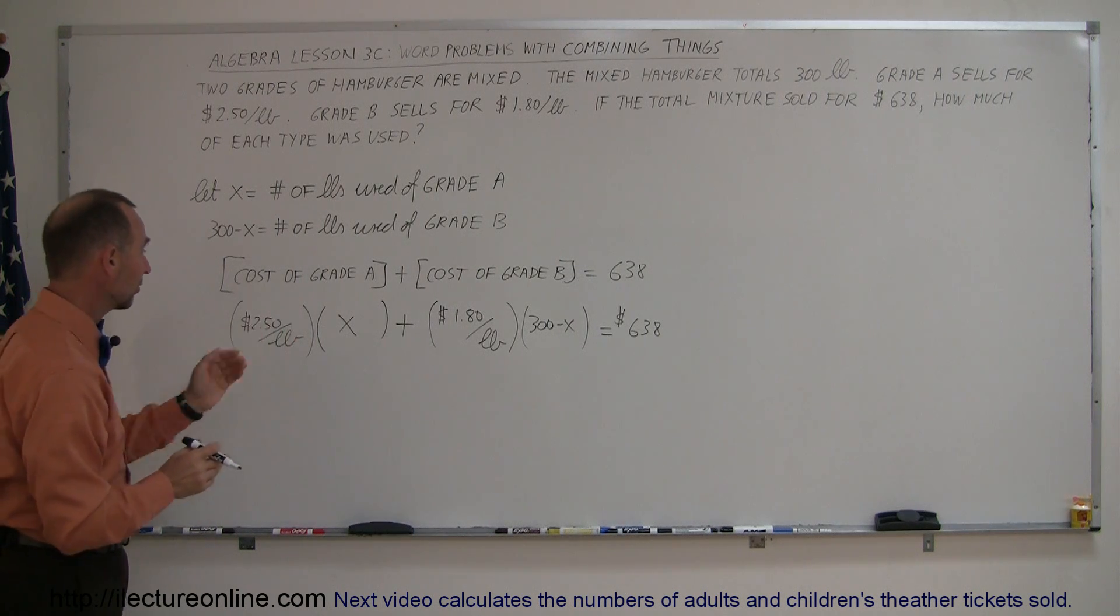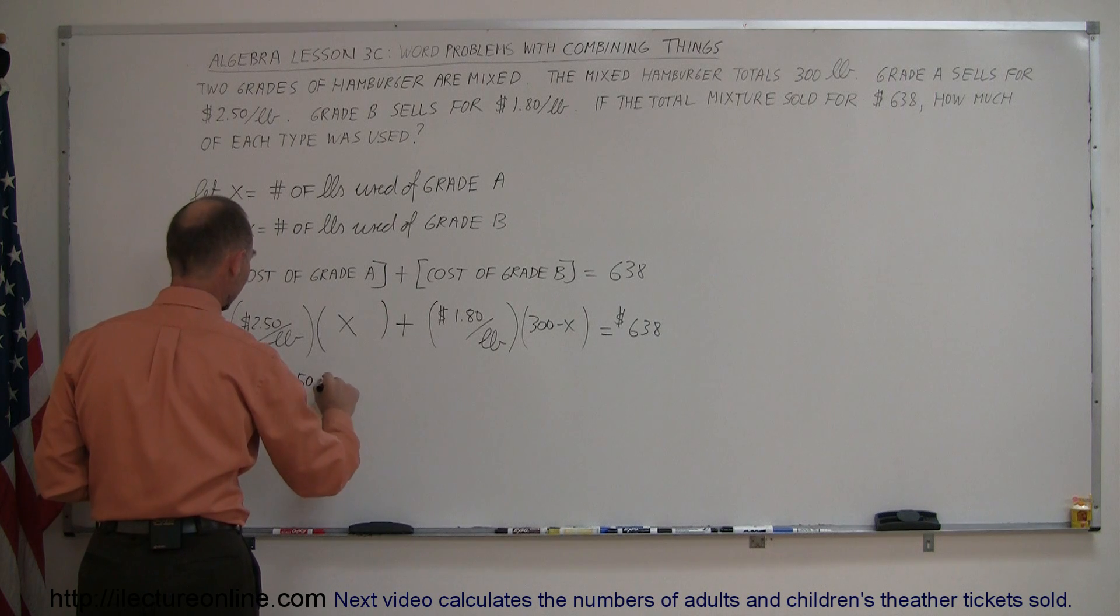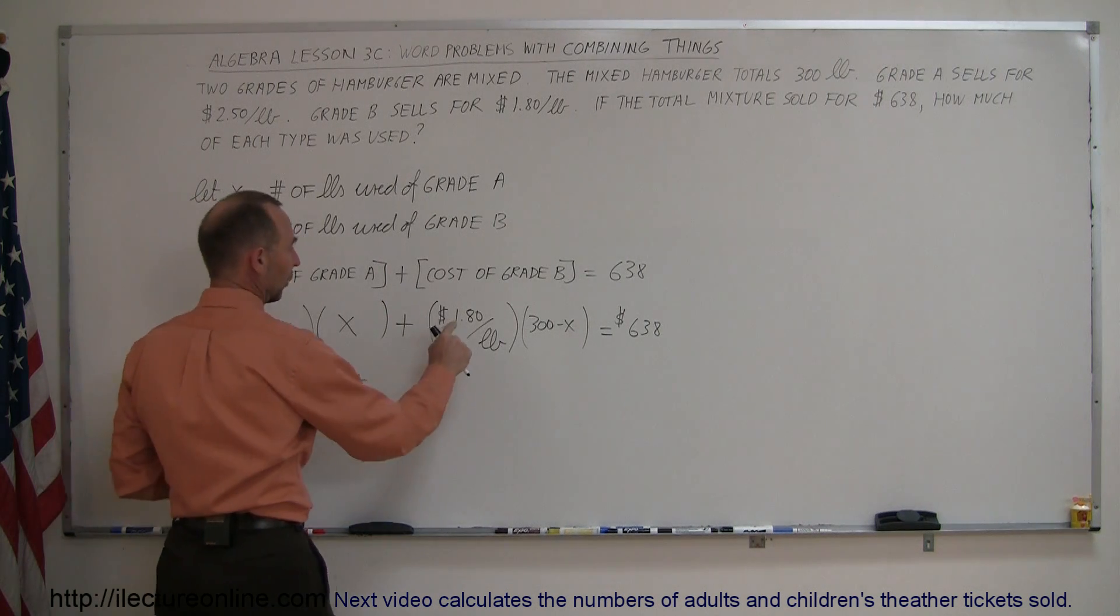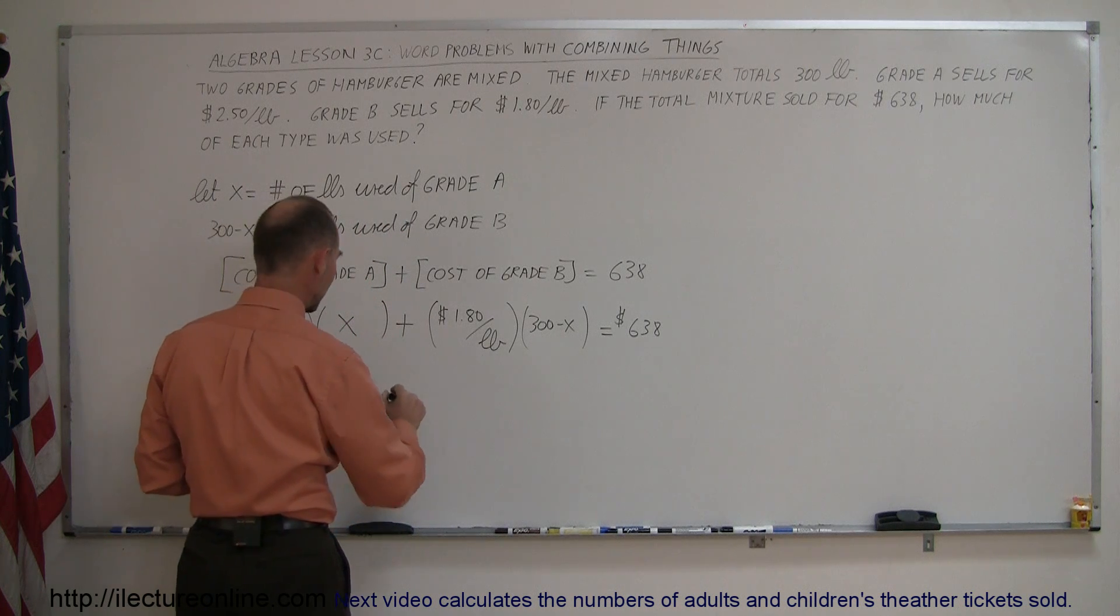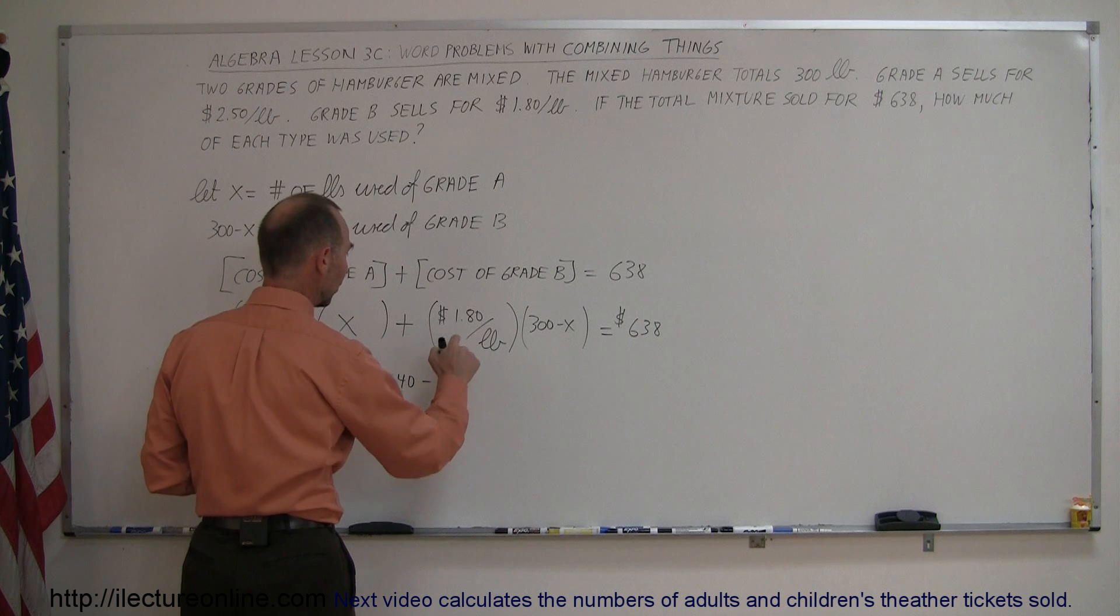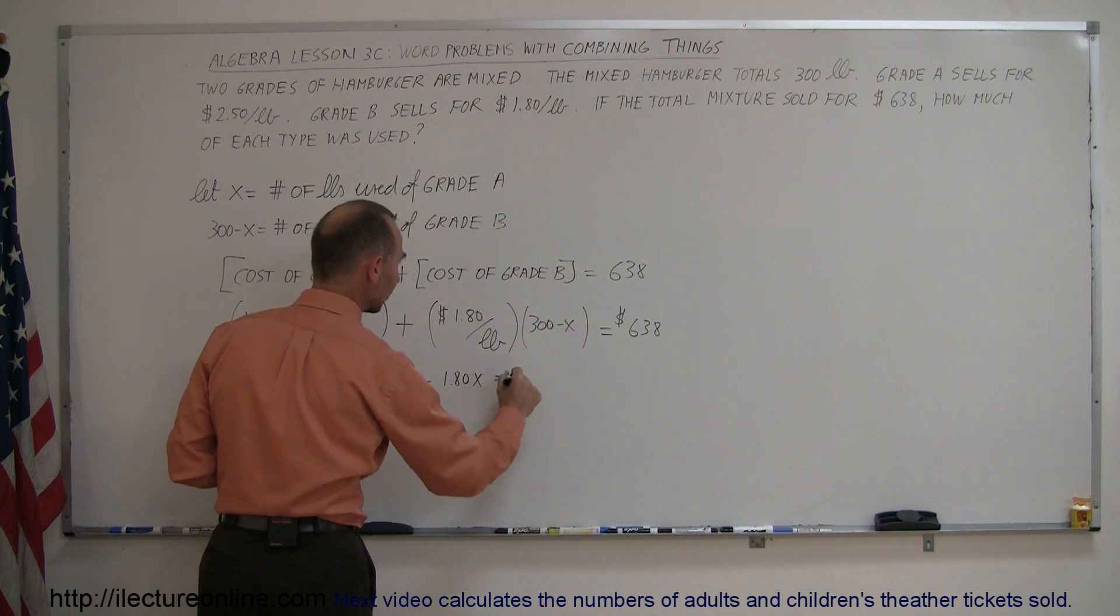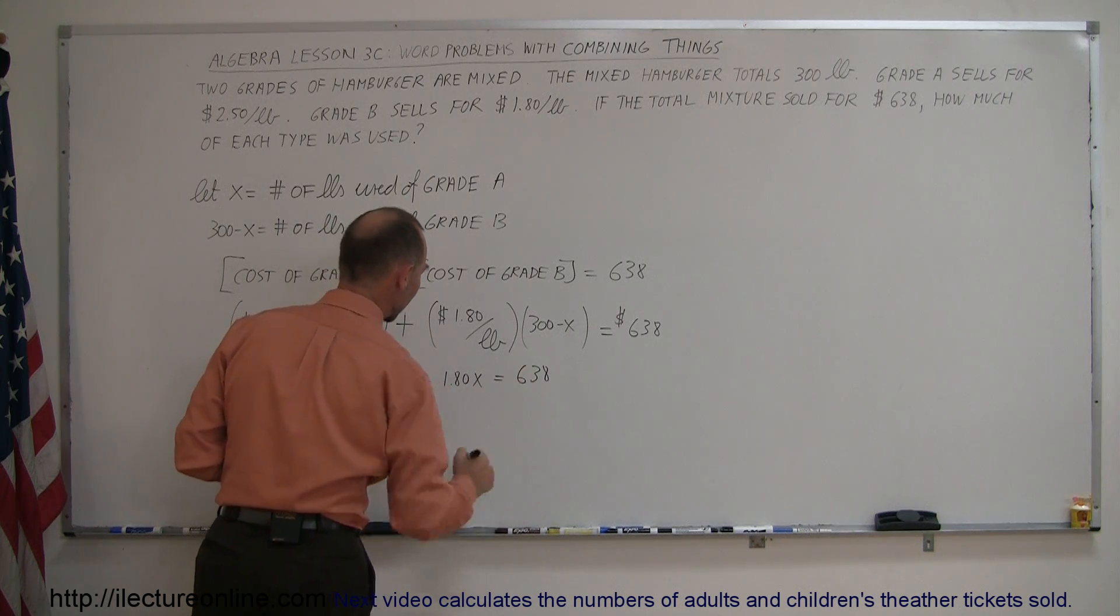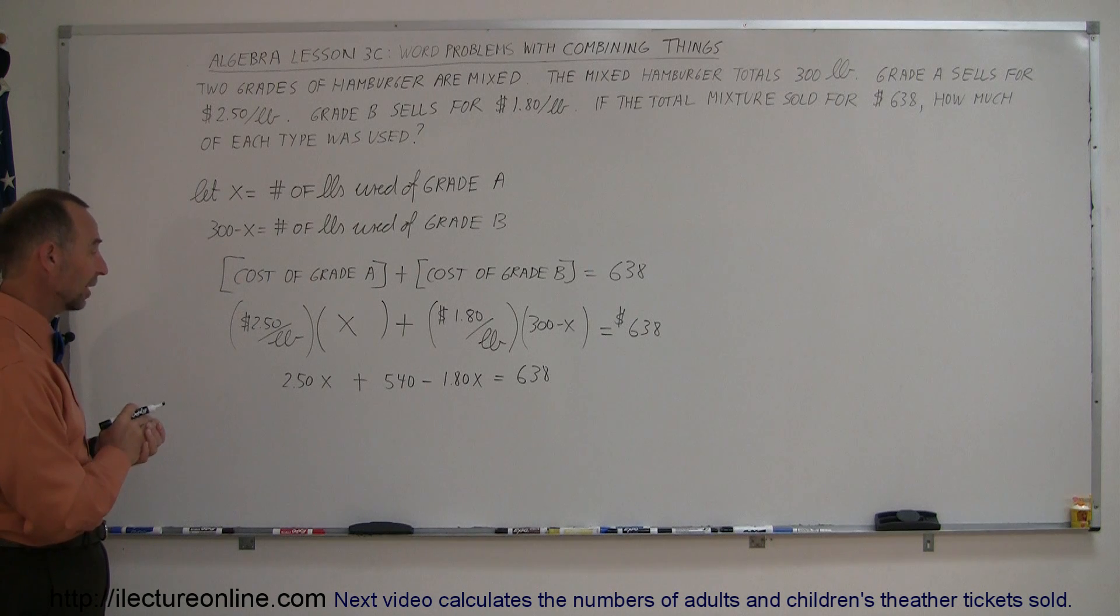So working out what's here, we have X times 2.50, so 2.50X plus 1.80 times 300, that would be 540 minus 1.80X, and that equals 638. And now we're ready to solve this equation for X.